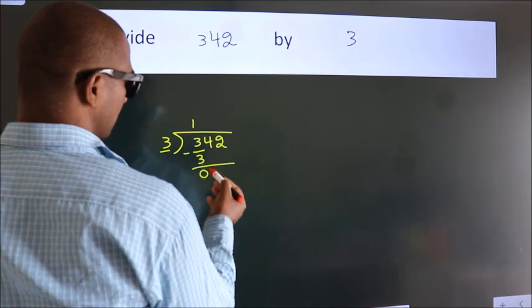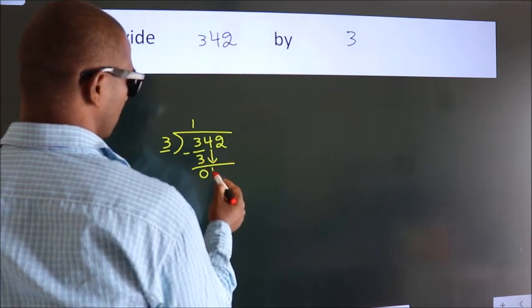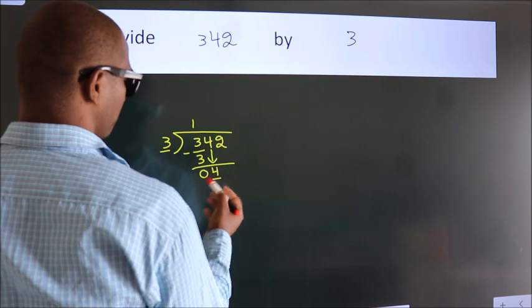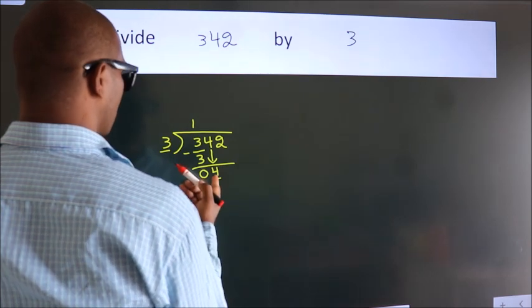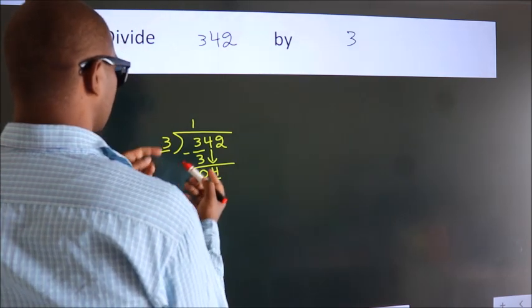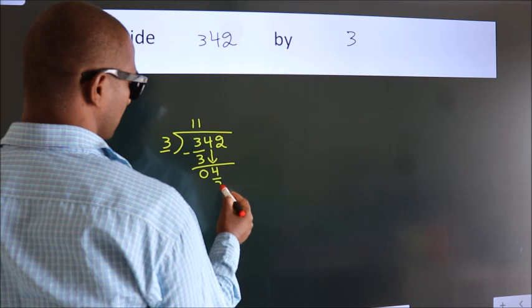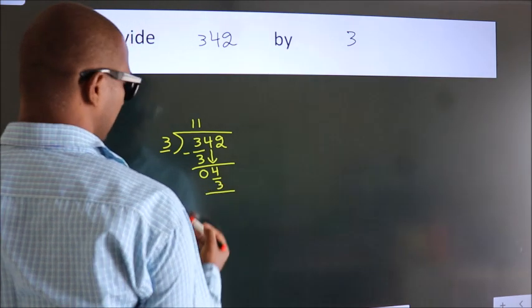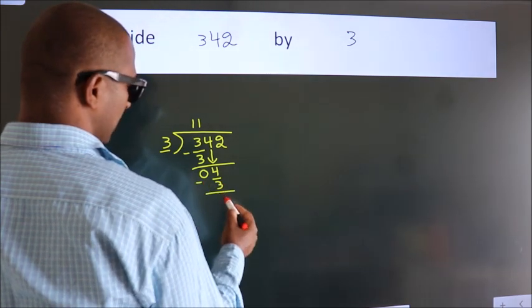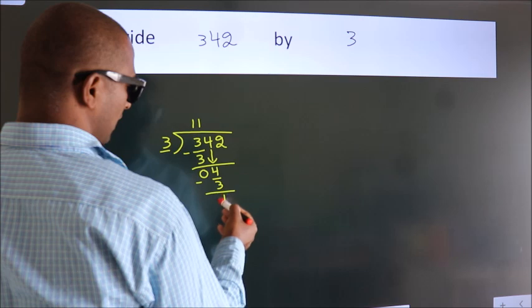After this, bring down the beside number. So 4 down. So 4. A number close to 4 in 3 table is 3 once, 3. Now, we subtract. We get 1.